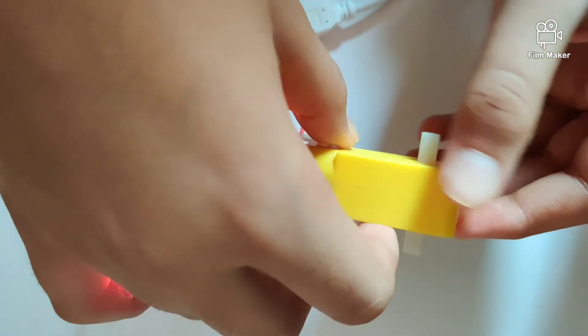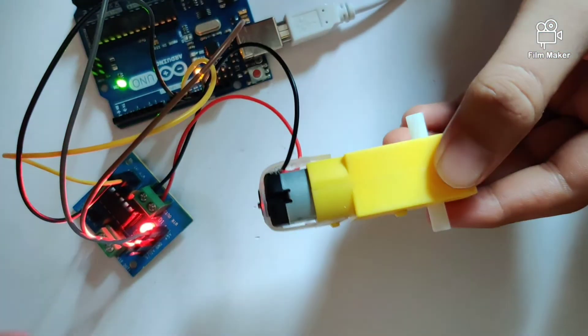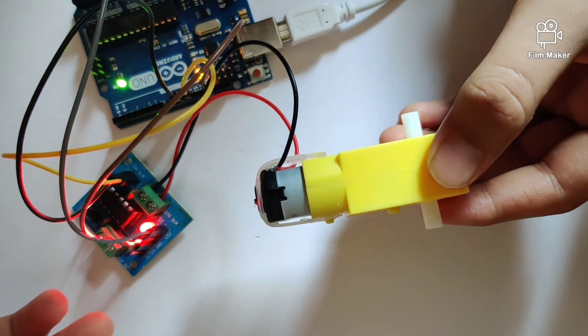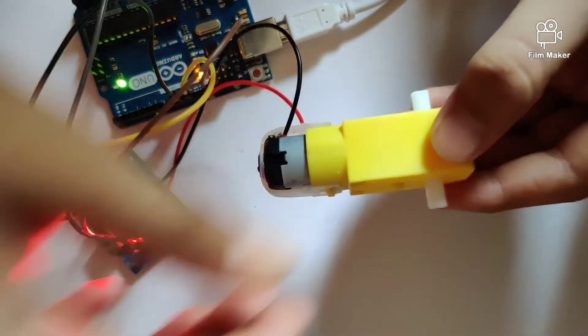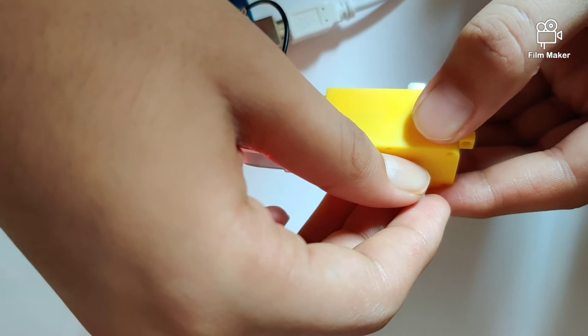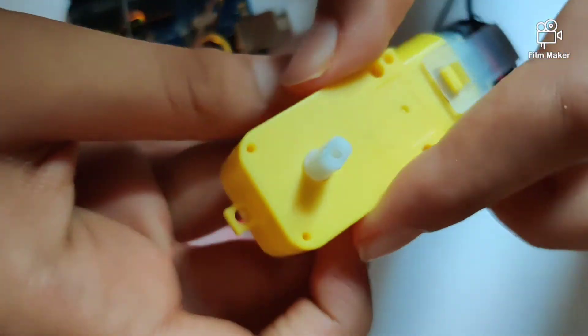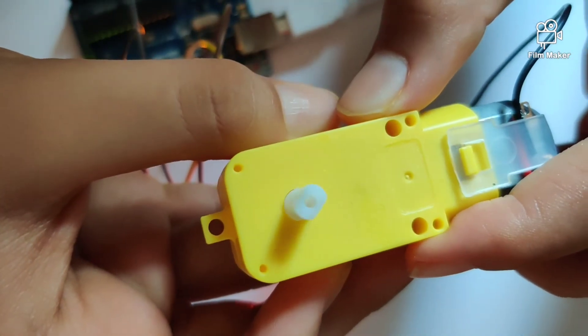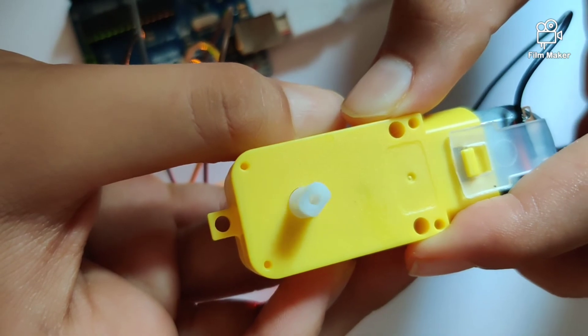So if you see in our program, we have given the command to rotate in one direction, and after one second go in the opposite direction. So as you can see, it goes anticlockwise, and then after one second goes in the clockwise direction.